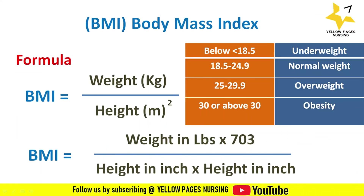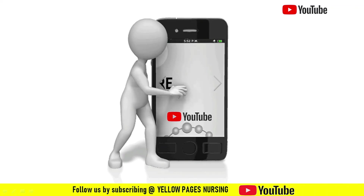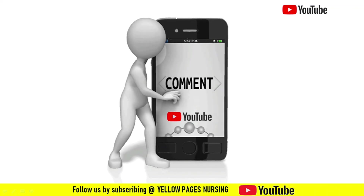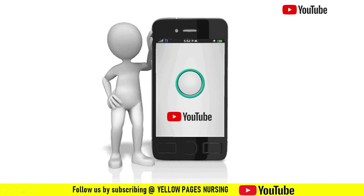To summarize, the two important things discussed in this session were: body mass index can be calculated using two different formulas when weight and height are expressed in different units, and how we use BMI to categorize the weight of patients. If you found this video useful, please like it, share it, and subscribe, and do not forget to hit the bell icon. Thanks for watching, have a nice day.